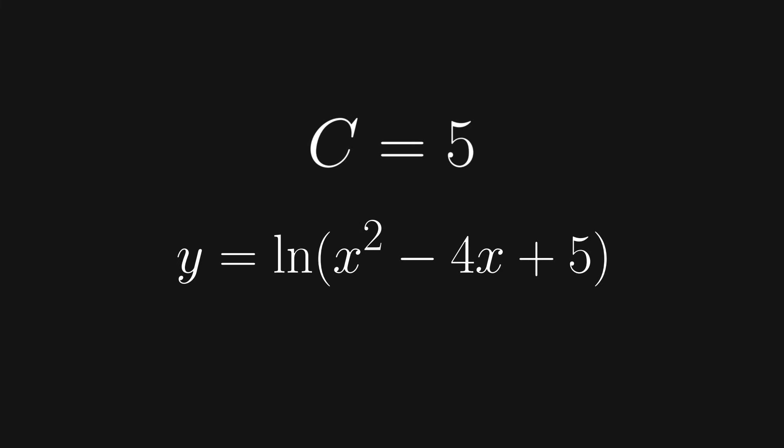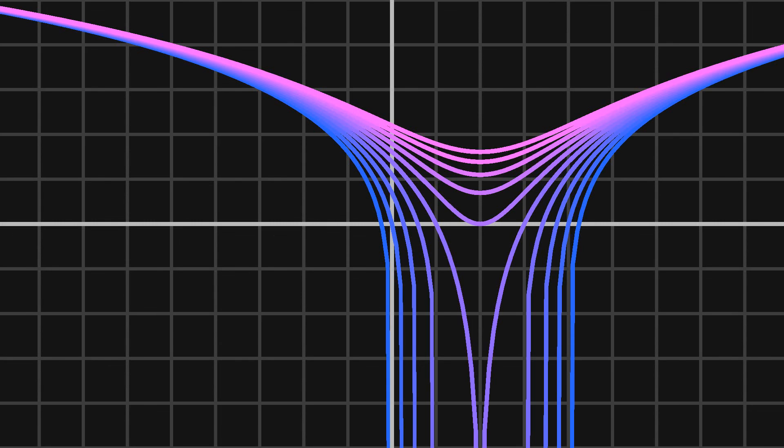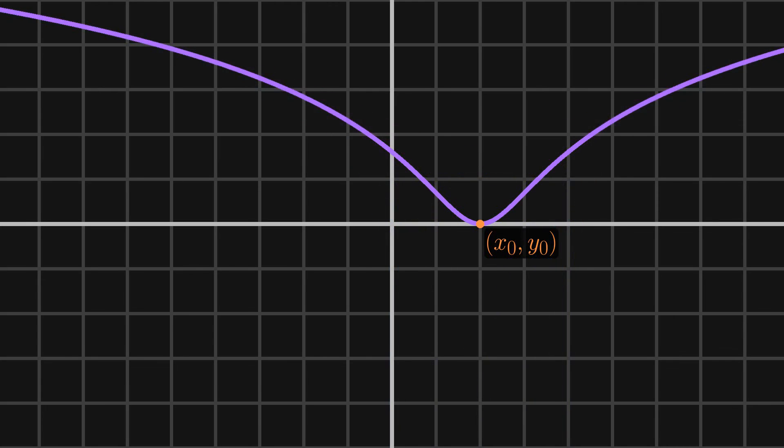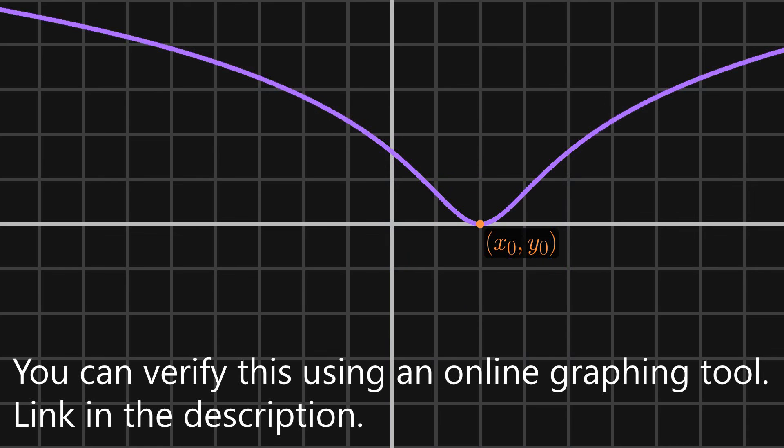Now we found our specific solution based on initial condition. If we go back to the family of curves idea I was talking about earlier, if we plot the point x0, y0 from our initial condition, solving for a specific solution is equivalent to asking which one of these curves pass through the point x0, y0. Here you can see that we end up with the same answer, c equals 5.